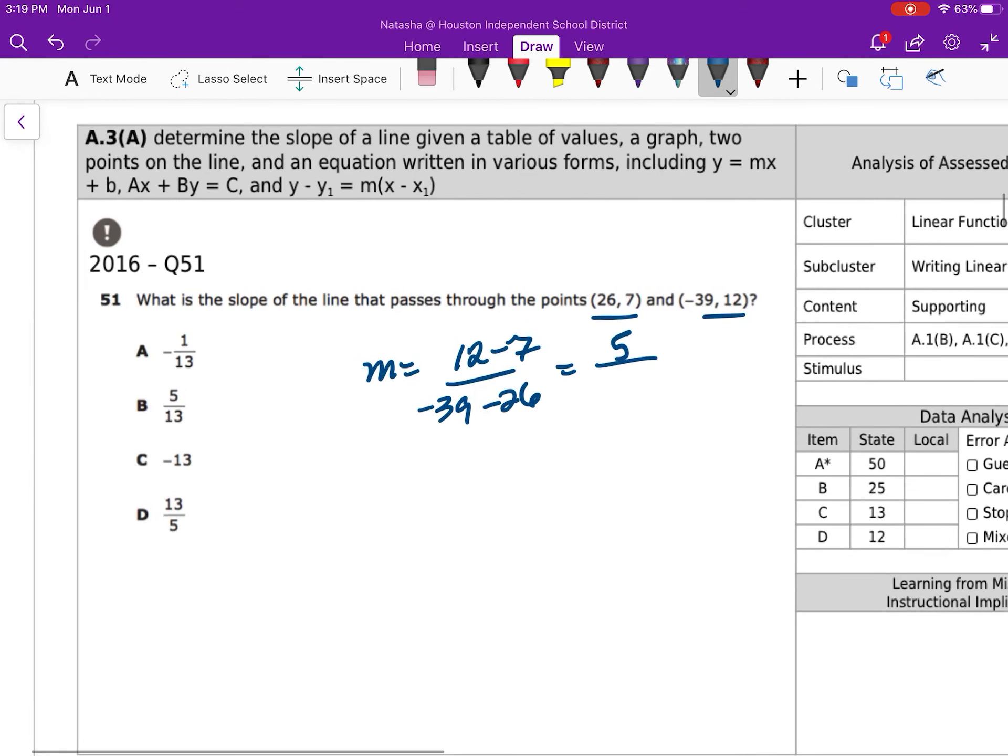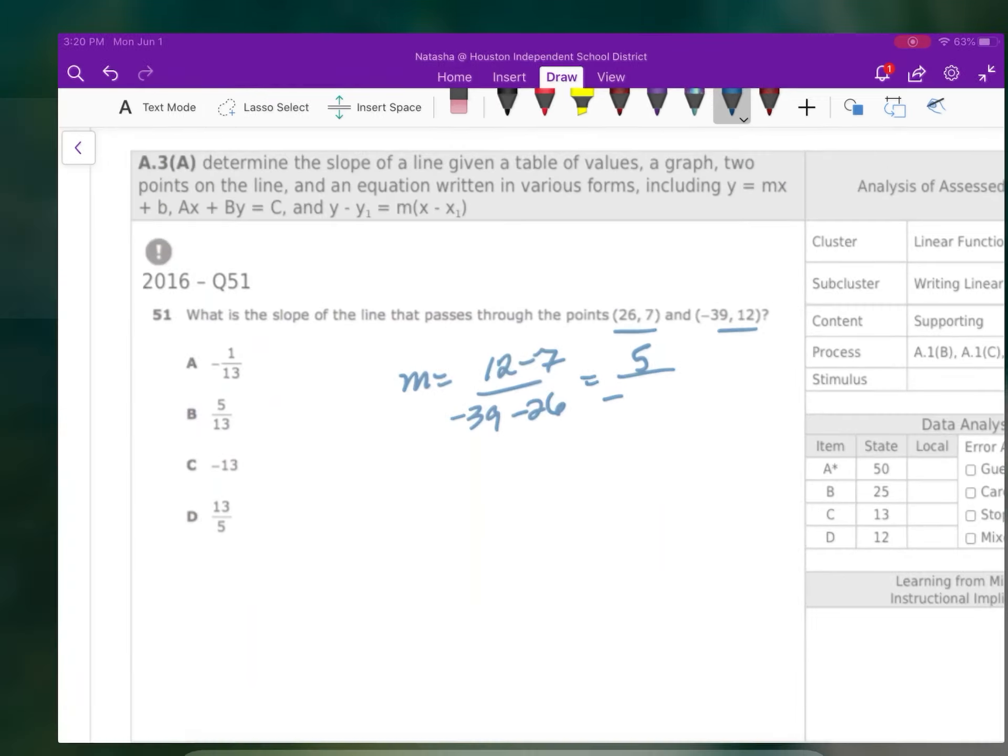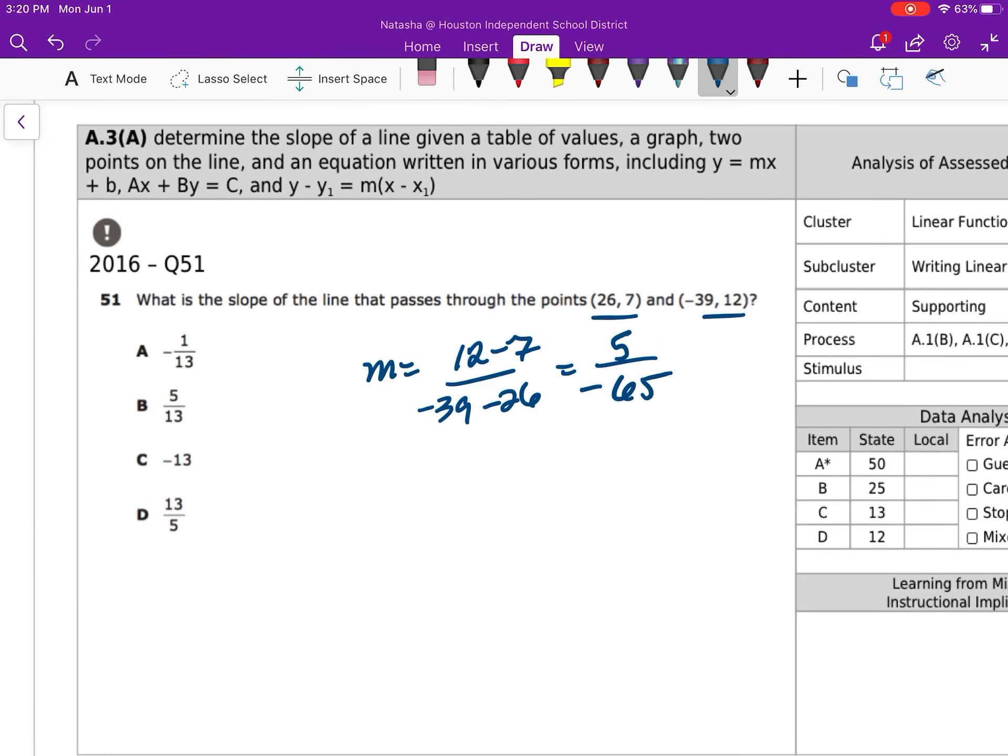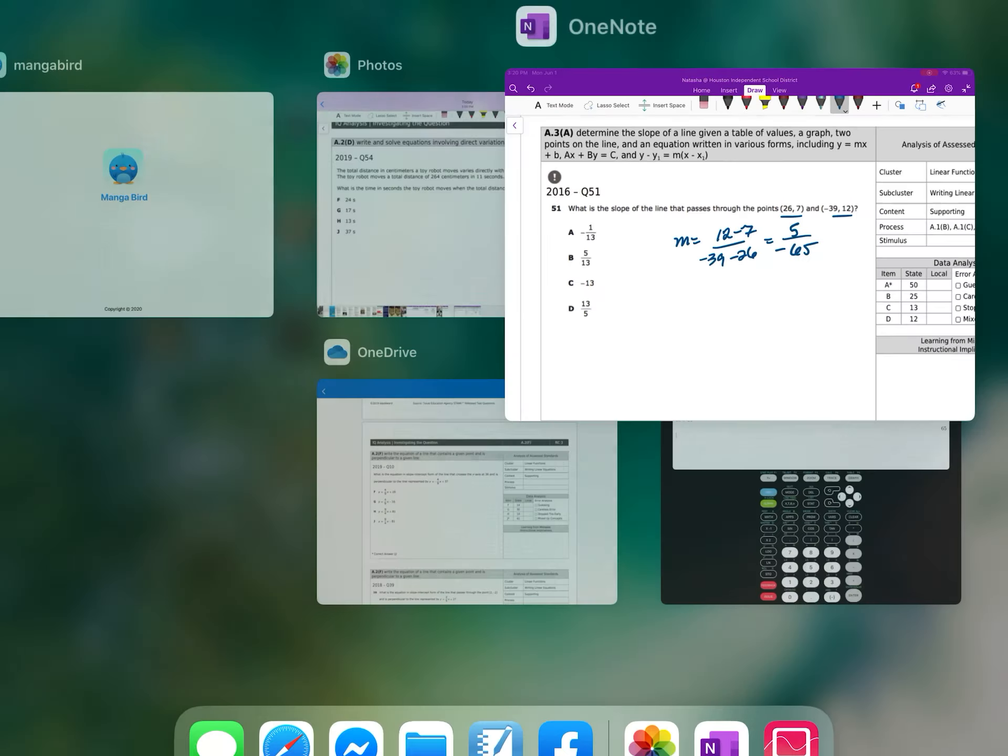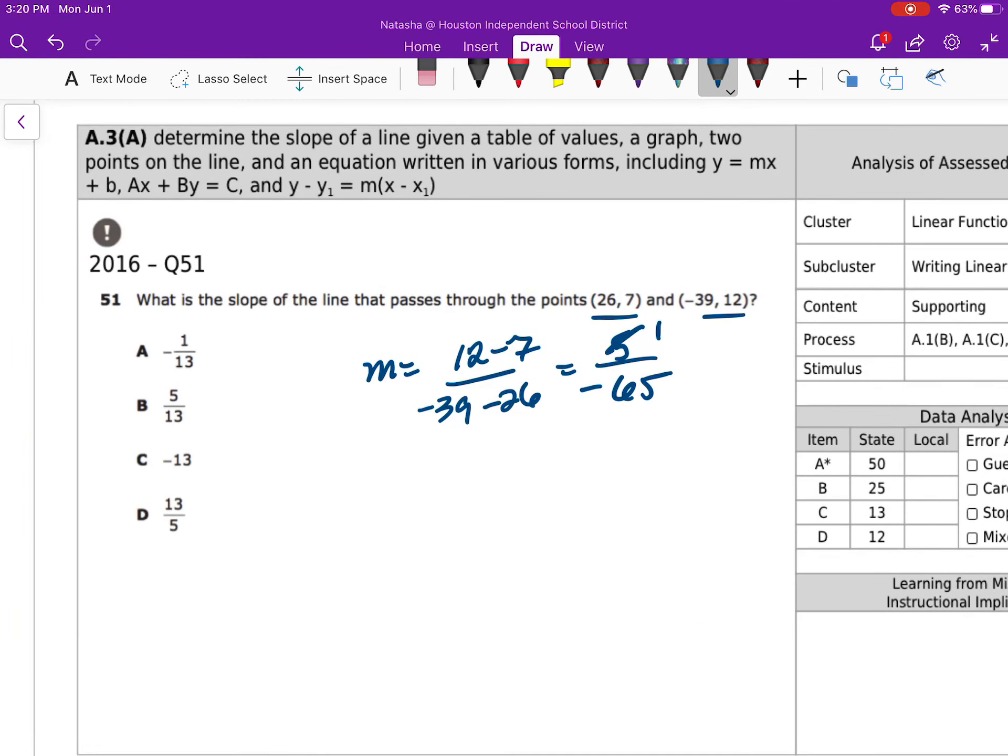And then negative 39 minus 26, giving me negative 65. So that's going to give me 5 over negative 65. 65 divided by 5 is 13, so 5 goes into itself one time, goes into that 13. So that's going to be equal to negative 1 over 13, which gives me my answer choice A.